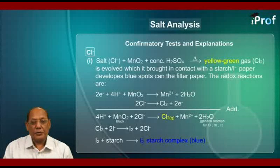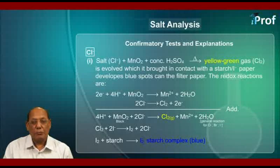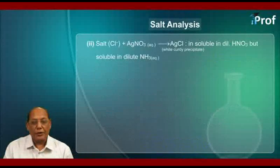Next, Cl2 + 2I⁻ on starch iodide paper gives iodine + 2 chloride ion. The I2 thus liberated immediately reacts with starch to give the blue iodine-starch complex.